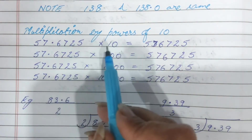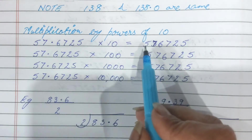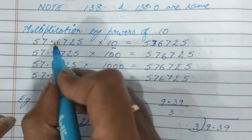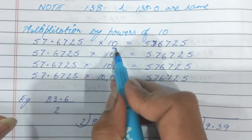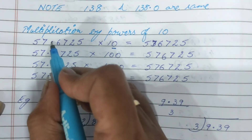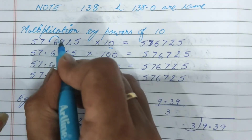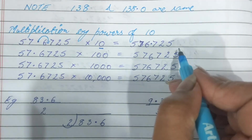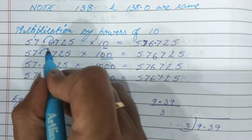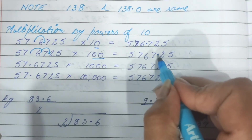Now I am teaching you how to do multiplication with the powers of 10. If we have multiples of 10, whenever we have any number of zeros we shift the decimal in front by that many zeros. In 57.6725, we are multiplying by 10 — that is 1 zero — so shift the decimal 1 place. The answer becomes 576.725. In the second one we are multiplying with 2 zeros, so we shift the decimal 2 places and the answer becomes 5767.25.